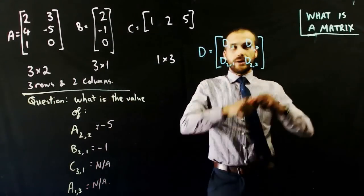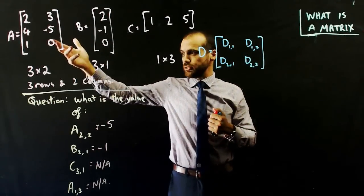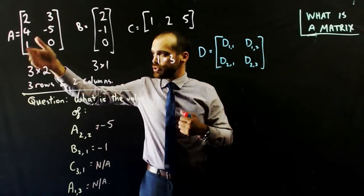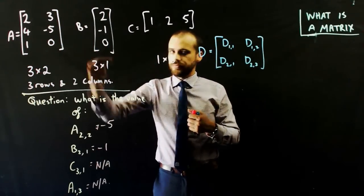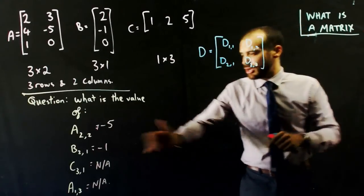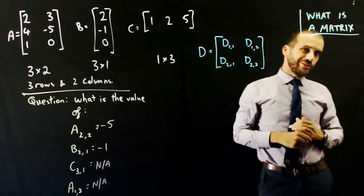All right, so a matrix is an array or a table of values. Those numbers can be anything. We talk about rows first and then columns. This is our notation for each individual element. And I might ask you which each individual element is.